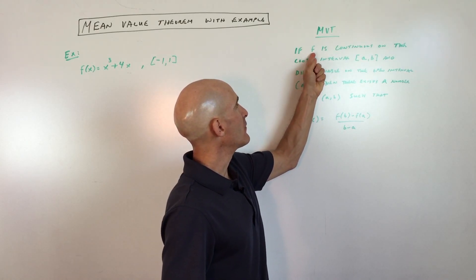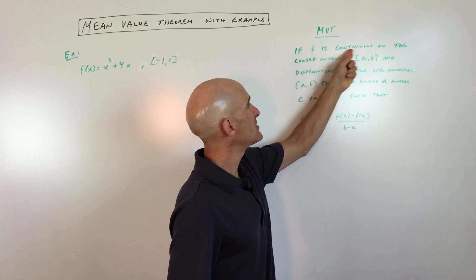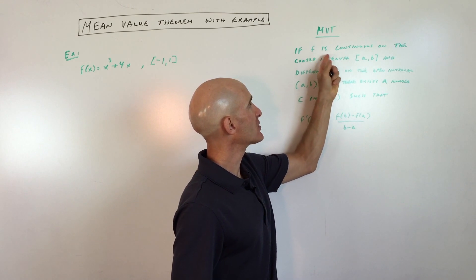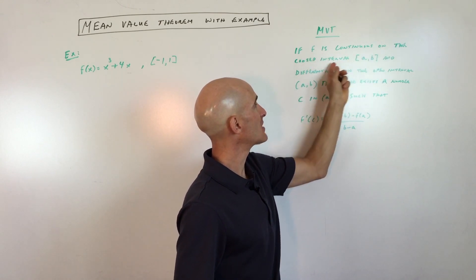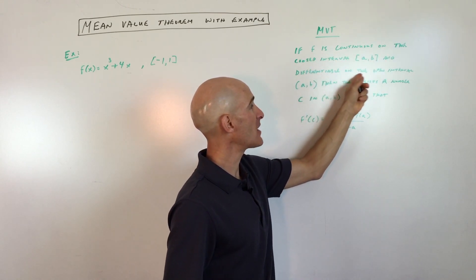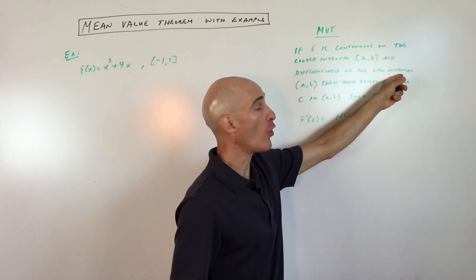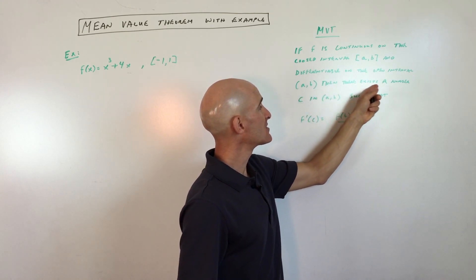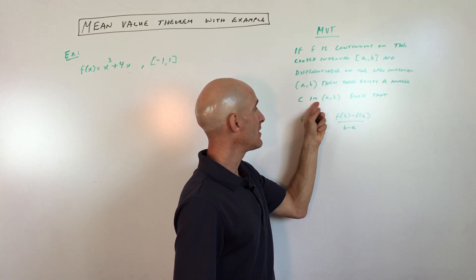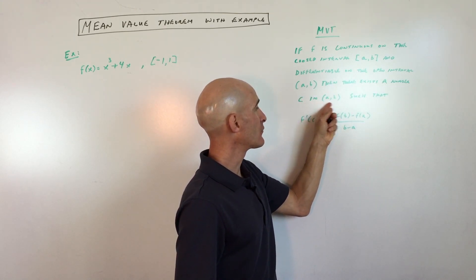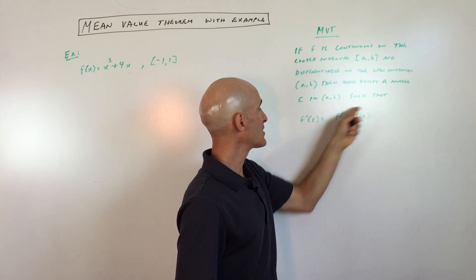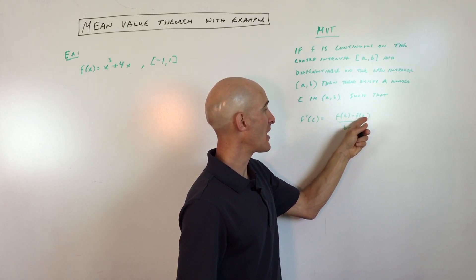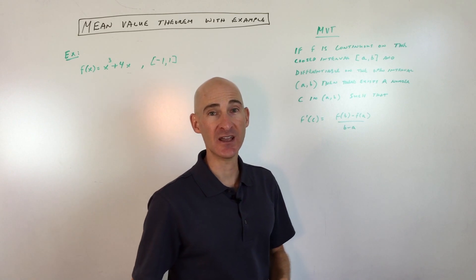The mean value theorem tells us that if f is continuous on the closed interval a, b, and it's differentiable on the open interval a to b, then there exists a number c in the interval a, b, such that f prime of c equals f of b minus f of a over b minus a.